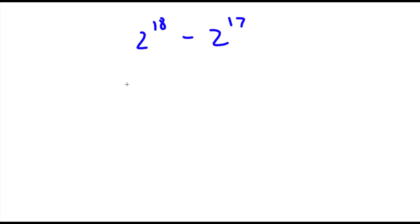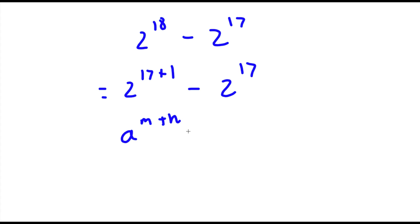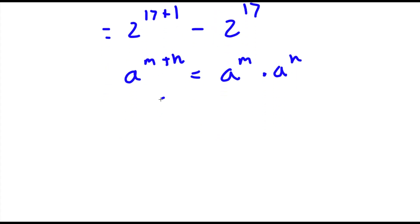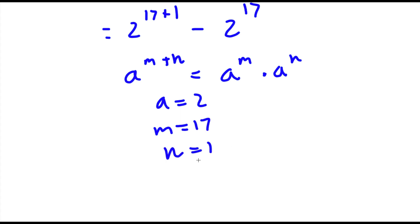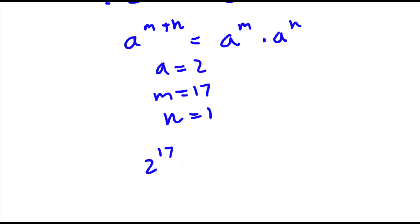Alright, so first off, 2 to the power of 18 is equal to 2 to the power of 17 plus 1. So now I have 2 to the power of 17 plus 1 minus 2 to the power of 17. If I have something in the form a to the power of m plus n, this is equal to a to the power of m times a to the power of n. So here a is 2, m is 17, and n is 1. So now I have 2 to the power of 17 times 2 to the power of 1, minus 2 to the power of 17.